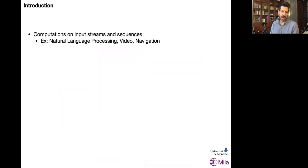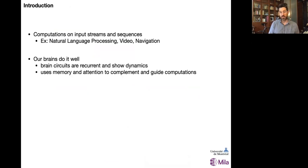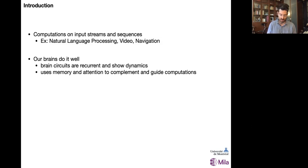What I'm interested in in this context are computations on input streams and sequences. Examples of that are natural language processing tasks, video tasks, navigation — these types of things. We all know that our brains do this very well. Brain circuits have fundamental ingredients that are important for these types of tasks, namely that brain circuits are recurrent and show dynamics, so they can adapt to dynamical processes and computational needs. Another ingredient is the use of memory and attention to complement and guide these types of computations across long timescales.